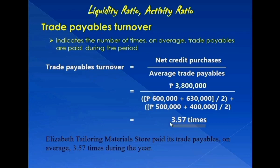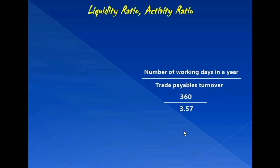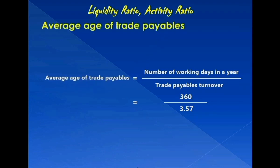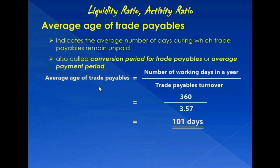These trade payables turnover, when used as denominator to divide the number of working days in a year — in this problem we assume to be 360 days — would give us the average age of trade payables of 101 days. The average age of trade payables indicates the average number of days during which trade payables remain unpaid. It is also known as conversion period for trade payables, or more simply, average payment period.